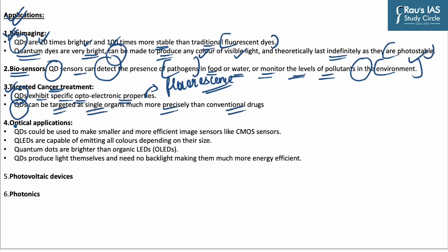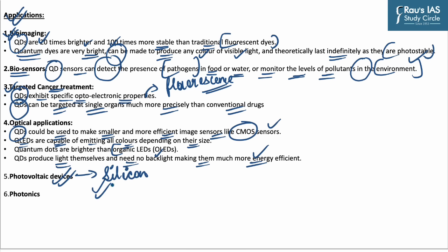The application of quantum dots can also be seen in optical applications. They could be used to make smaller and more efficient image sensors like CMOS sensors. Quantum LEDs are capable of emitting all colors depending on their size and are brighter than organic LEDs. They can produce light-dense cells and need no backlight, making them much more energy efficient. Quantum dots have the potential to boost the efficiency of silicon photovoltaic cells and are best suited for photonic-based computing capable of achieving high speeds.